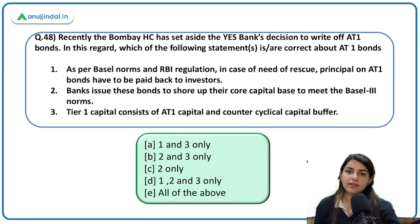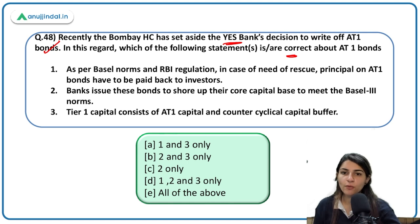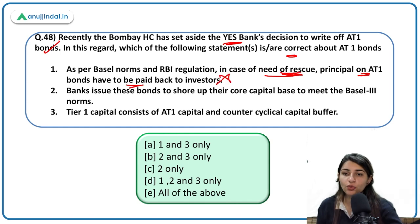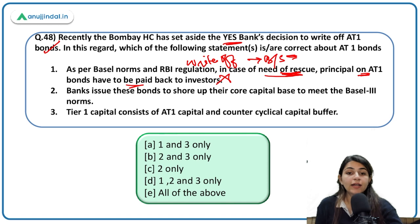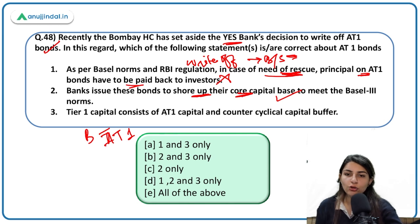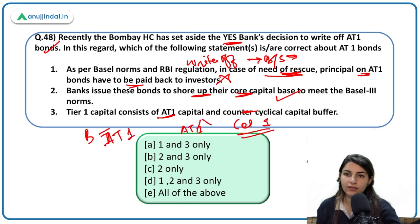More on AT1 bonds under Basel norms: in case of need of rescue, the principal on AT1 bonds has to be paid back to investors — incorrect; in case of rescue, banks can write off these bonds from their balance sheet and do not have to pay investors. Banks issue these bonds to shore up their core capital base to meet Basel 3 norms — correct. Tier 1 consists of AT1 capital and counter-cyclical capital buffer — incorrect; Tier 1 capital consists of AT1 capital and Common Equity Tier 1 (CET1) capital.